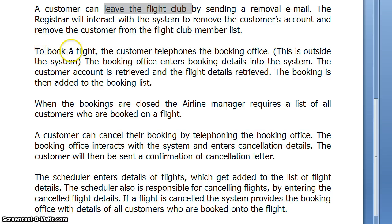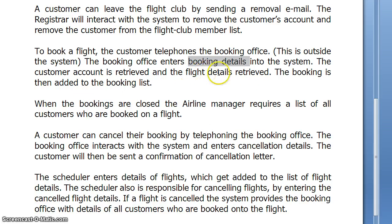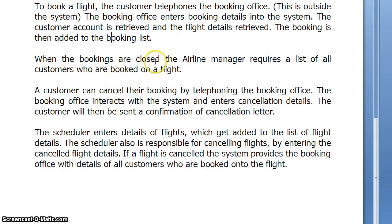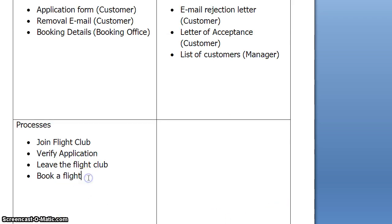To book a flight, the customer telephones the booking office — this is outside the system. The booking office enters booking details, so we've got booking details as an input. The customer's account is retrieved, flight details retrieved, and the booking is added to the booking list. So the process is: book a flight. When the bookings are closed, the airline manager requires a list of all customers who are booked on a flight — so that is an output: list of customers, going to the manager. And the process there: generate list.